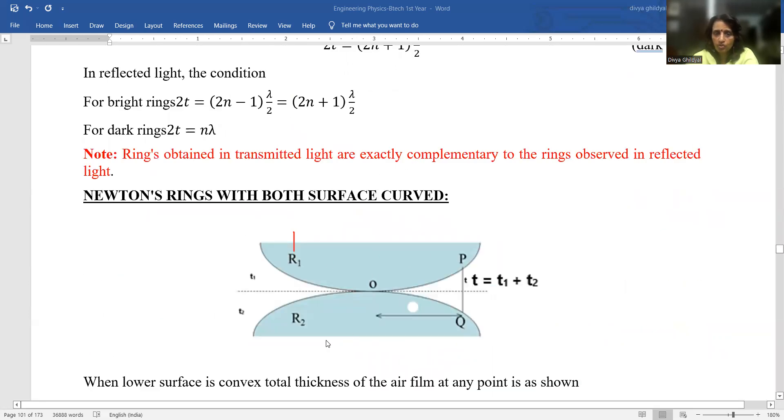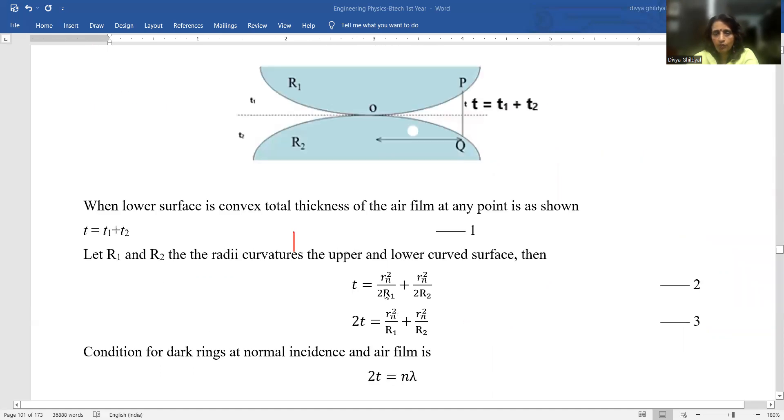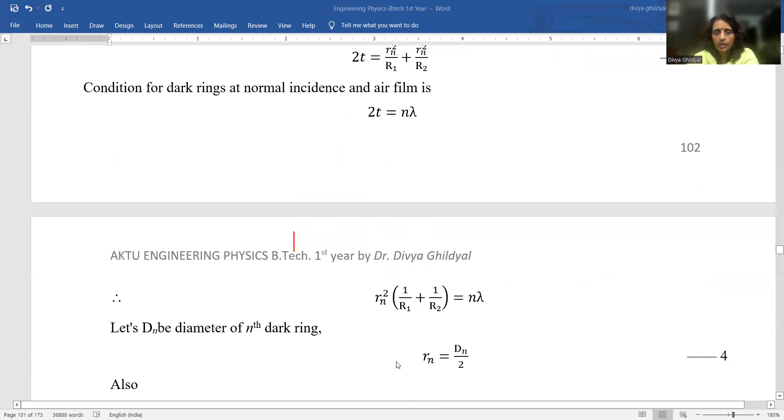Two cases of Newton ring are there in your syllabus when both the plano convex lens surfaces curved are kept like this. Then, total thickness of air film becomes T = T1 + T2.